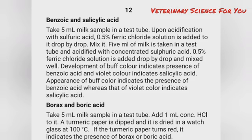Detection of boric acid — take 5 ml milk sample in a test tube and add 1 ml concentrated HCl. A turmeric paper is dipped and dried in a watch glass at 100°C. If the turmeric paper turns red, it indicates the presence of boric acid.